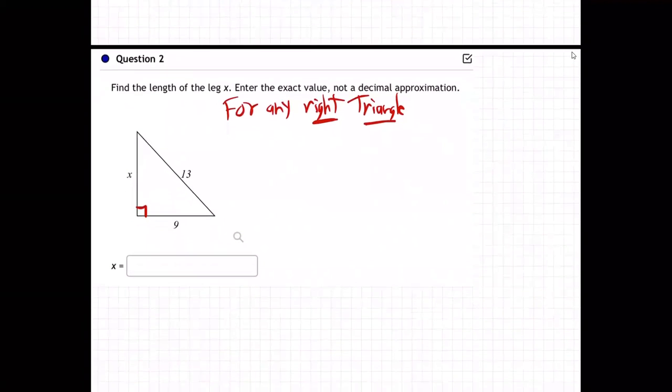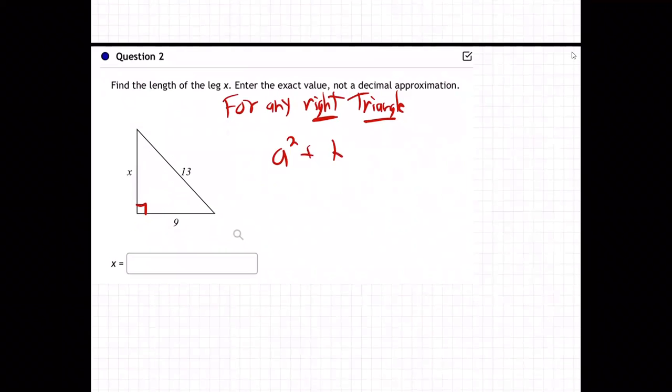We can use A squared plus B squared equals C squared. This is called the Pythagorean theorem. I'm not going to quiz you over the name, that is where it comes from, Mr. Pythagoras and his group a long time ago, Pythagorean theorem.